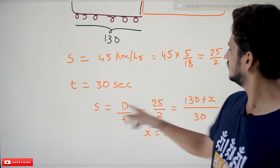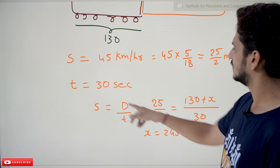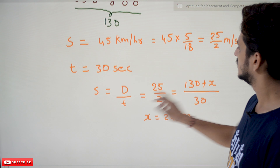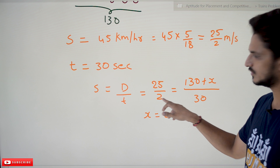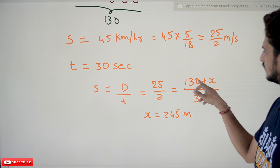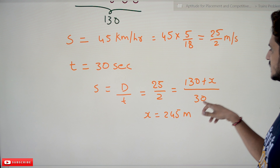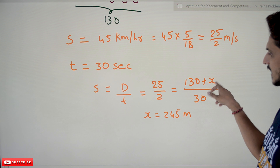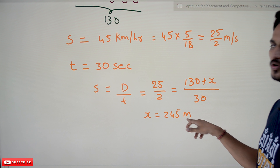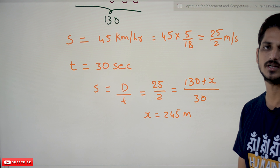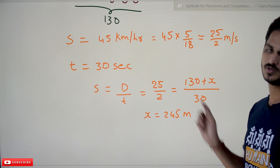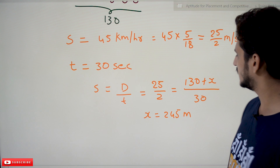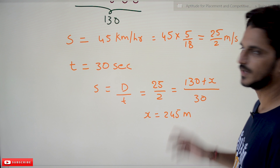Speed equals distance by time: 25/2 equals (130 + x) divided by 30. We need to find x. Solving this equation, x equals 245 meters — that is the length of the bridge.